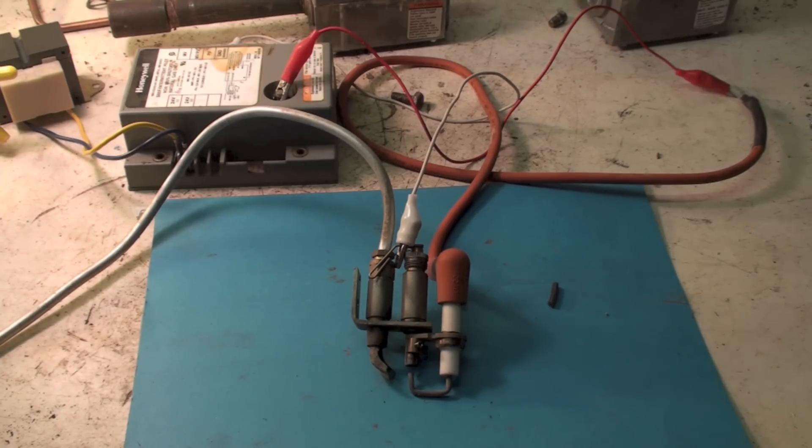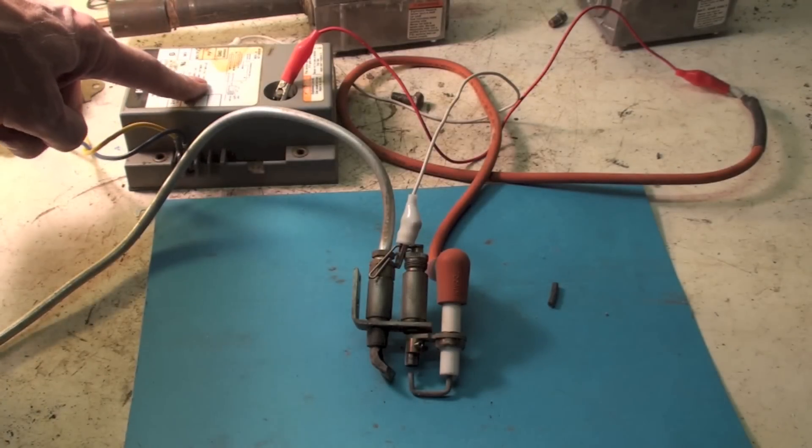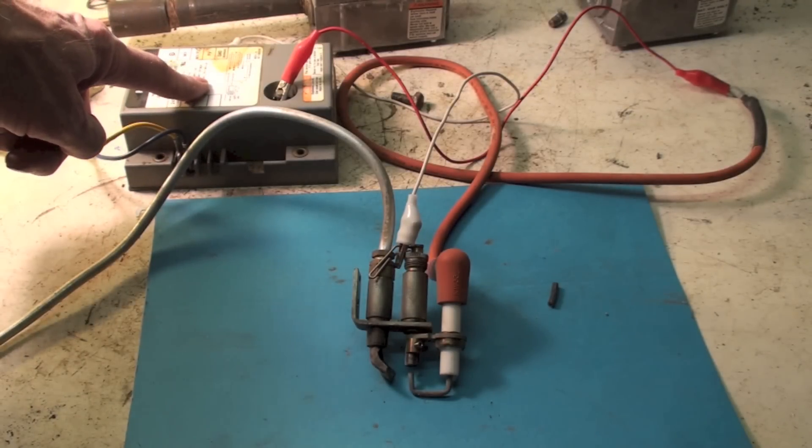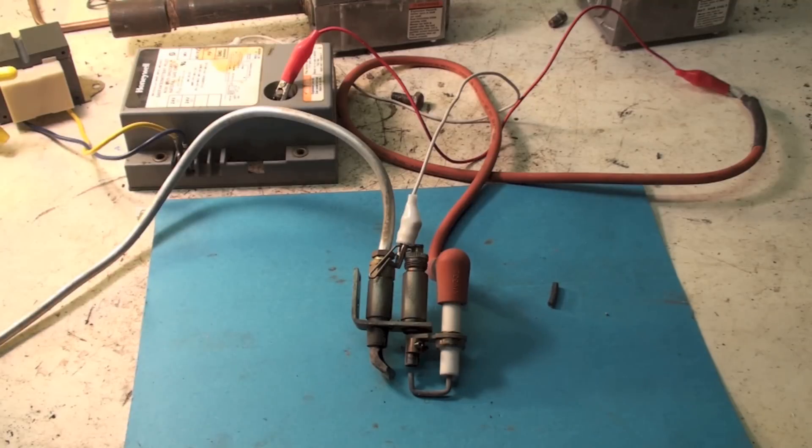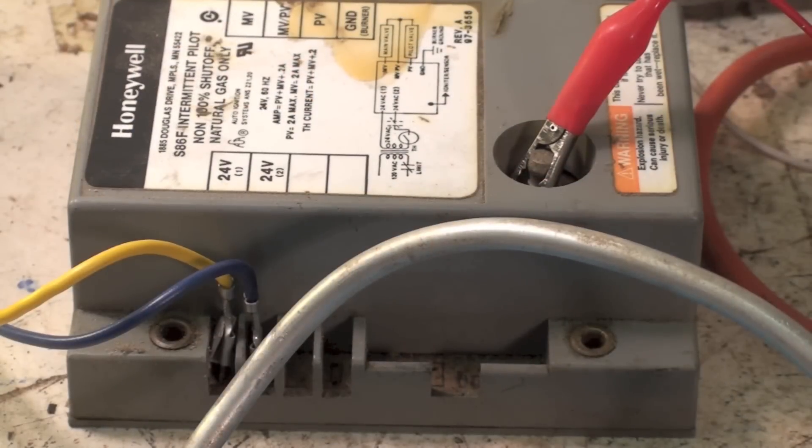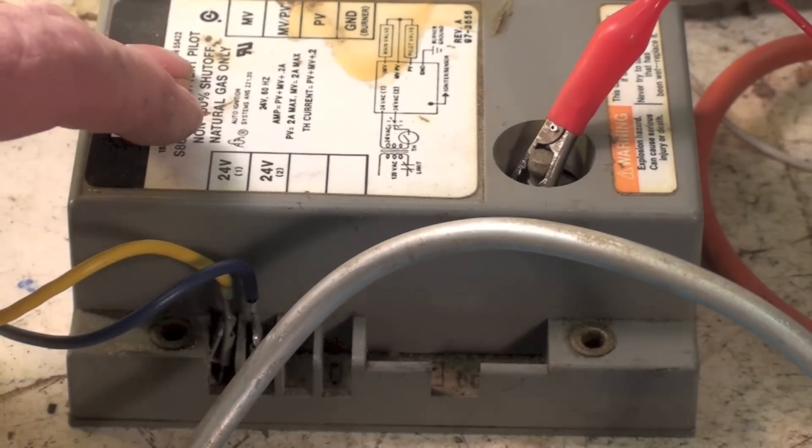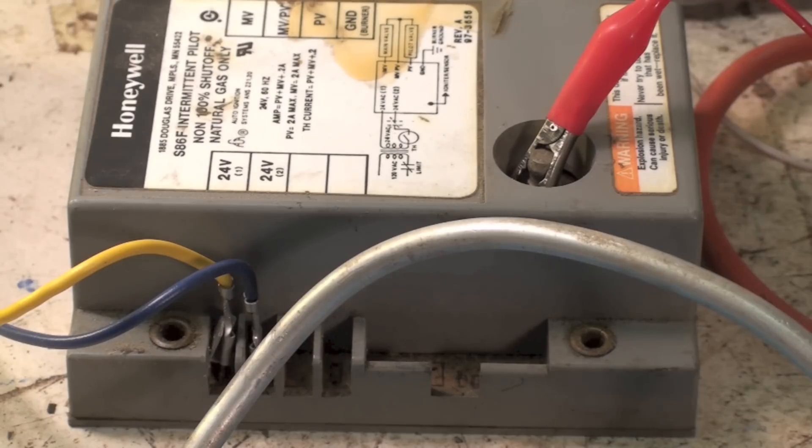What I've done here is I've jerry-rigged this old S86, which is a real old one. I'll use a newer one too, but I've got it kind of jerry-rigged up to power. You can see the 24 volt terminals here. I've hooked this up to a 24 volt transformer, and I'm going to plug that thing in and we'll take a look at that pilot assembly.